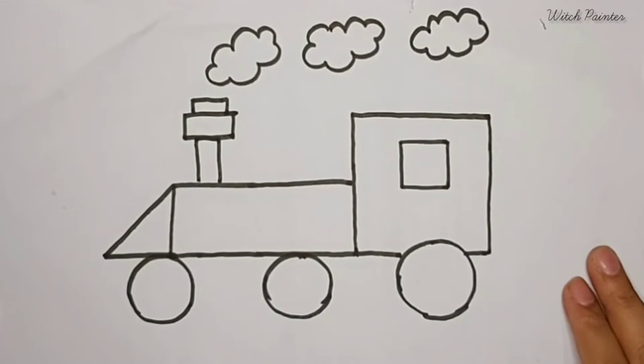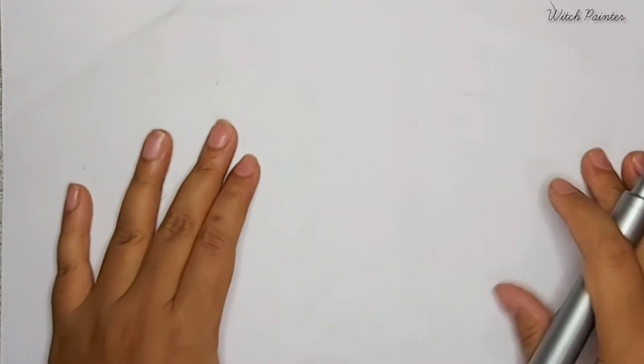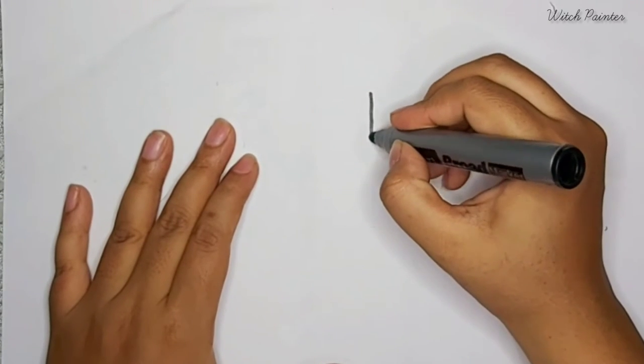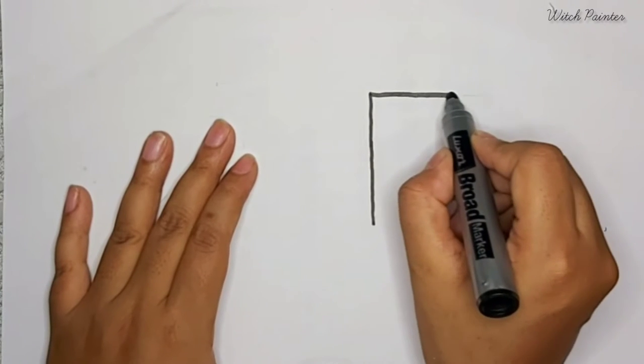Today we will draw a train with the help of shapes. To draw the train, you will first draw a square. I'm not using a scale; please use a scale to draw the square.